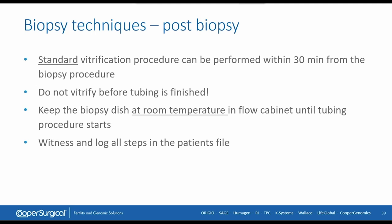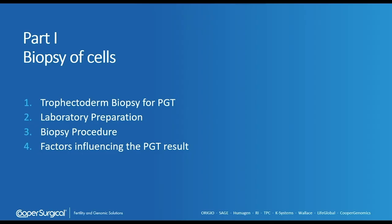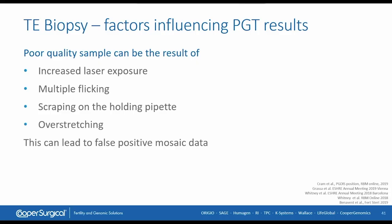Witness and log all steps in the patient file. A poor quality sample can result from too many laser hits — increased laser exposure or high intensity — multiple flicking or scraping of the sample against the holding pipette, or overstretching. This can lead to false positive mosaic data, as demonstrated by different authors.